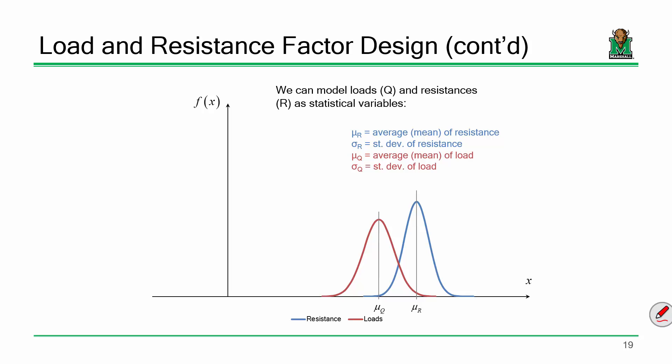The first thing I notice is that the resistance curve is to the right of the loads curve. That better be the case, because what I'm saying is, on average, the resistance is larger than the loads — and that better be the case. If it was the other way around and I was designing a bridge, that would mean grandma is falling in the river, and I don't want anything to happen to grandma.